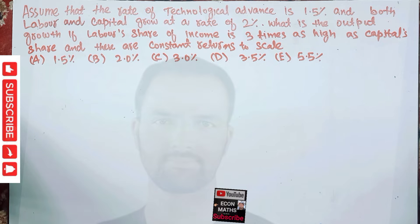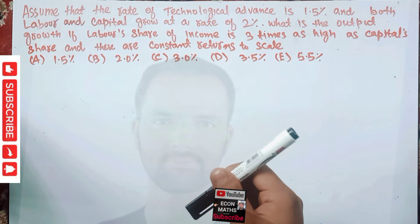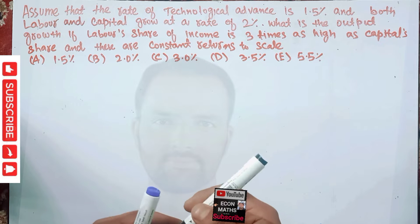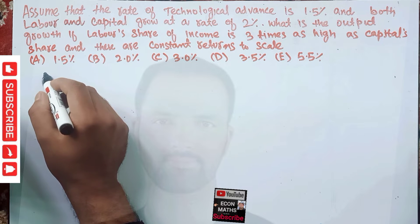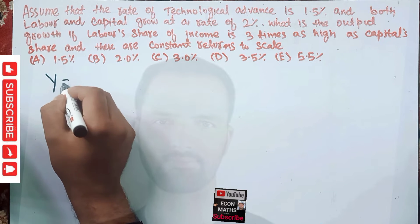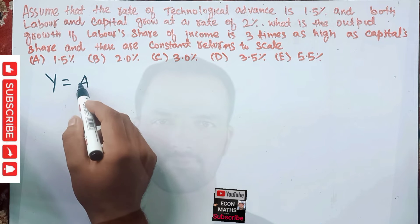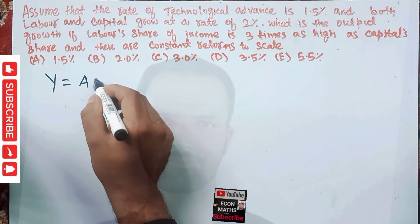The options are 1.5%, 2.0%, 3.0%, 3.5%, or 5.5%. We will see how to solve this question. The question is related to the Cobb-Douglas production function. So what is our Cobb-Douglas production function? I will write it here. Y is equal to A, which is the technological advance or total factor productivity...